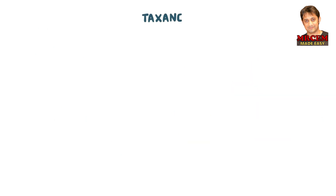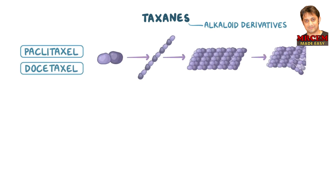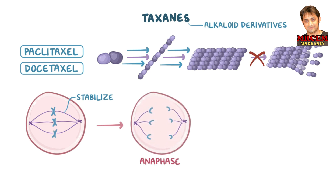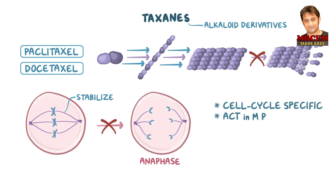The taxanes, which are also alkaloid derivatives, include paclitaxel and docetaxel. Taxanes also act on microtubules but differently from vinca alkaloids. They enhance tubulin polymerization into protofilaments and microtubules, but they also bind directly to the spindle fibers and stabilize them — acting like cement that overstabilizes the microtubule and prevents it from depolymerizing and breaking down. This is a problem because the microtubules need to break down during anaphase so the cell can divide. So taxanes are also cell cycle specific and act on M phase.